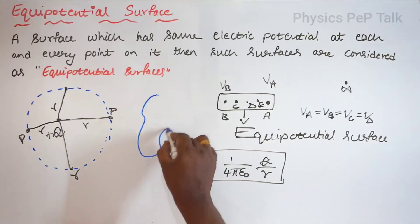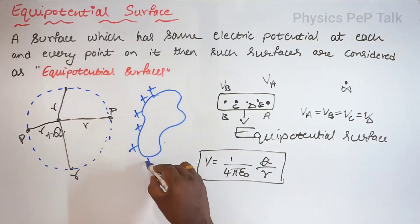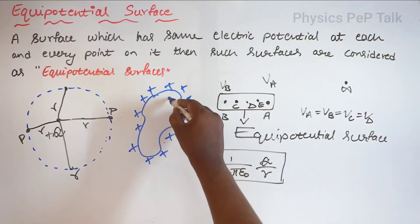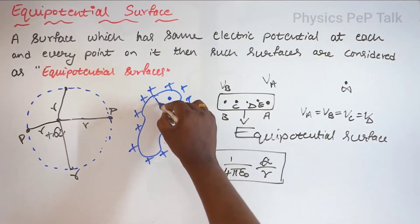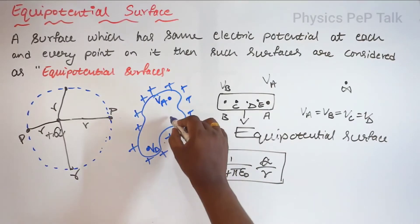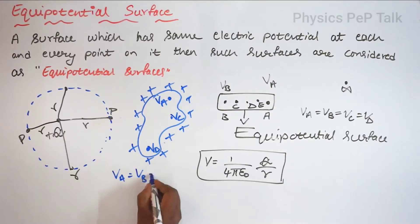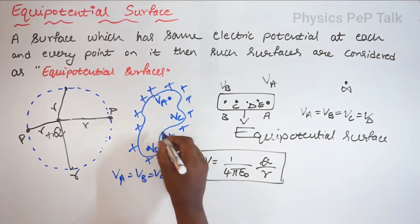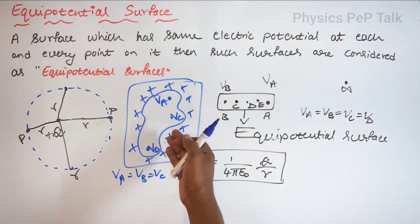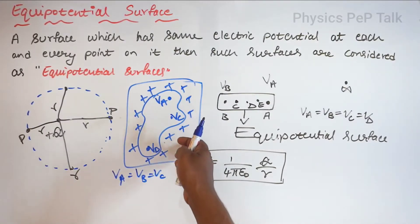Let me consider a body which is of irregular shape and which is charged uniformly throughout its surface. I will call a point A which has electric potential V of A, a point B with electric potential V of B, and point C with V of C. If V of A equals V of B equals V of C, then this charged body is an equipotential surface — and this is a real surface, whereas the sphere was an imaginary surface.